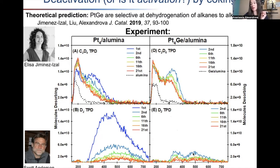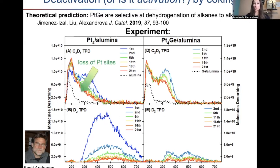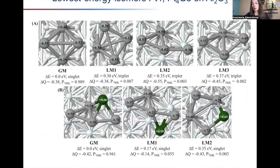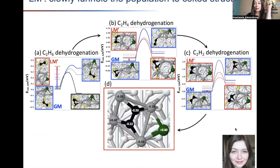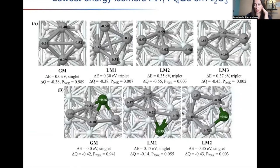For Pt4Ge, the story is different. First, the activity does go down a little bit, but the cluster retains ethylene binding sites while dehydrogenating very little from the beginning — as we predicted. That goes down and essentially goes to zero. The mystery is: how does it retain the sites, and how does it remain selective? What's going on here? This is actually a very interesting story also from the standpoint of how important metastable states can be.